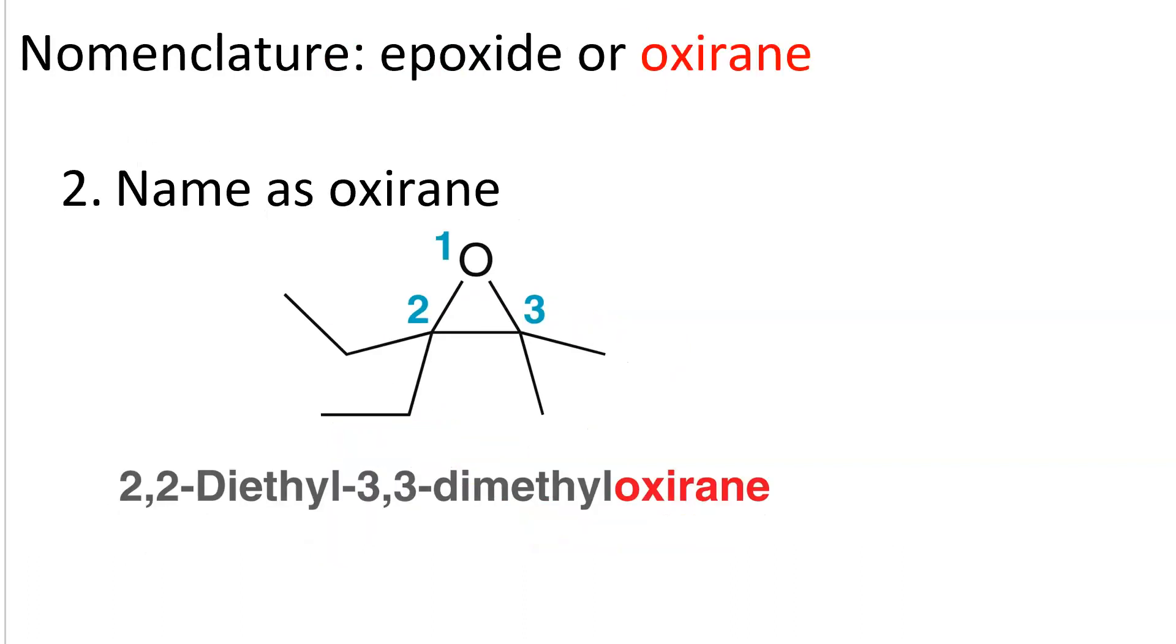If we choose instead to name the same compound as an oxirane, then oxirane is the parent chain. And in an oxirane, the oxygen is always number one. And then the two carbons are numbers 2 and 3.